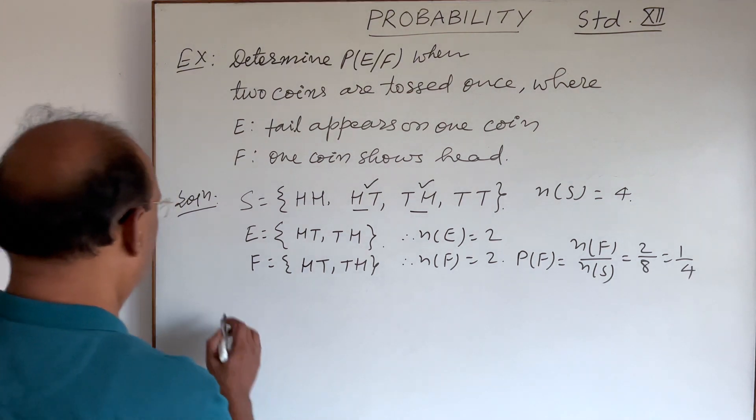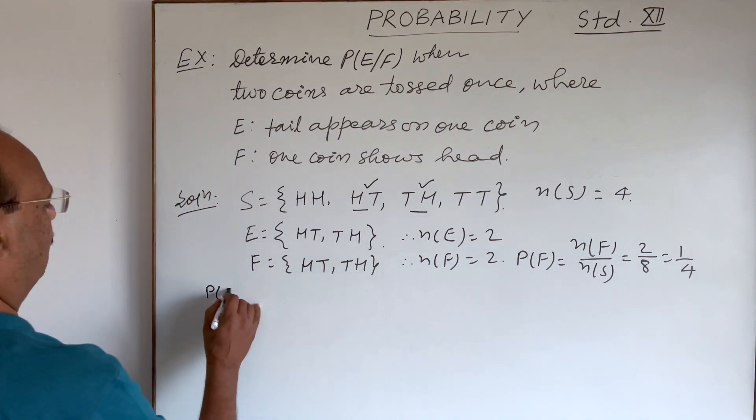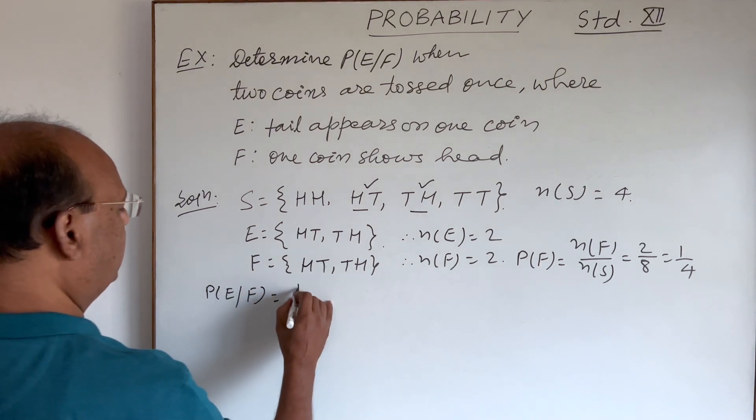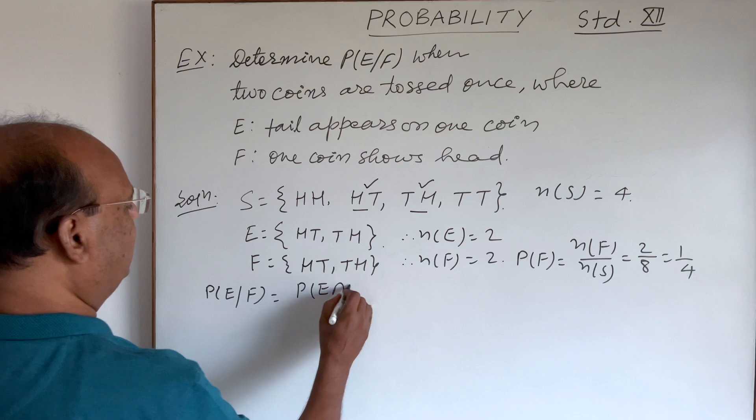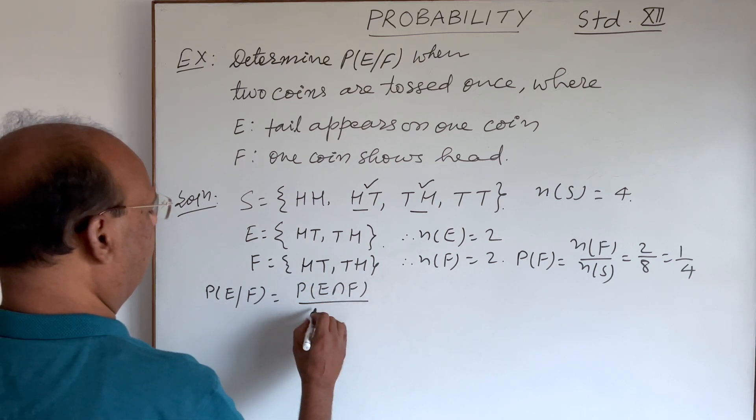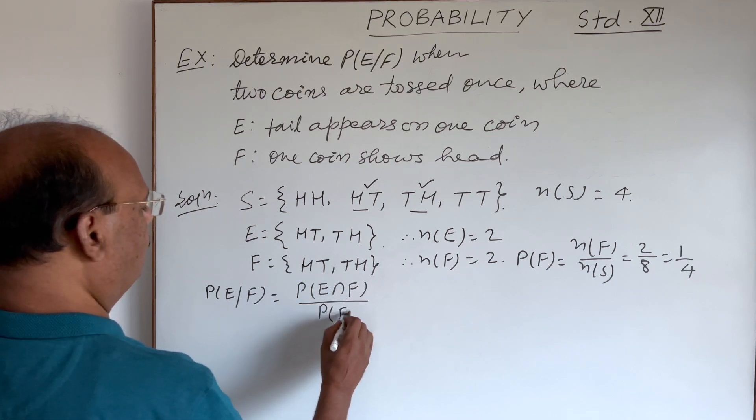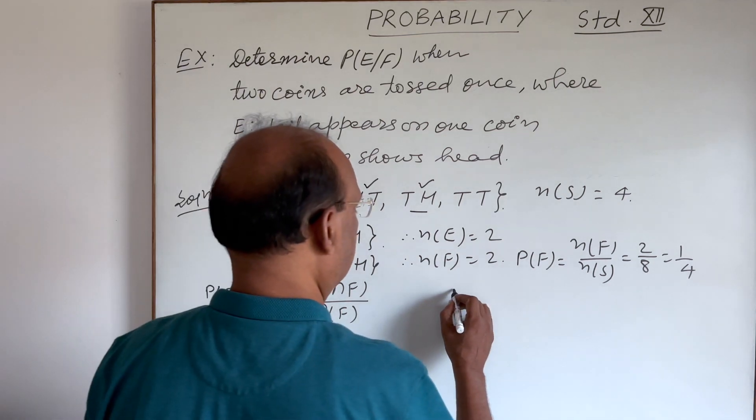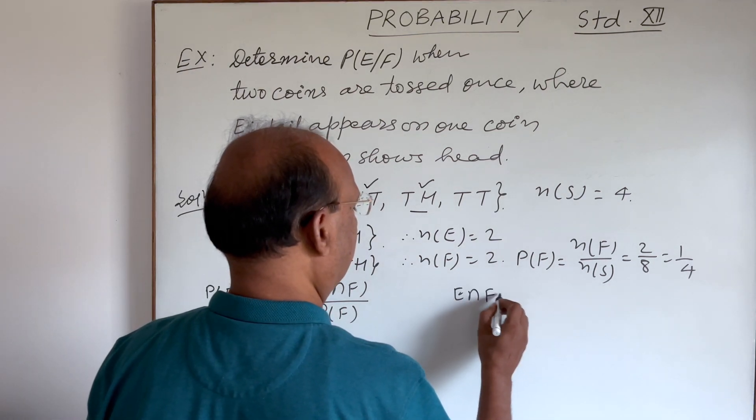Okay. So let us find here probability of E conditioned to F. The formula is probability of E intersection F divided by probability of F. So we need to find here E intersection F first.